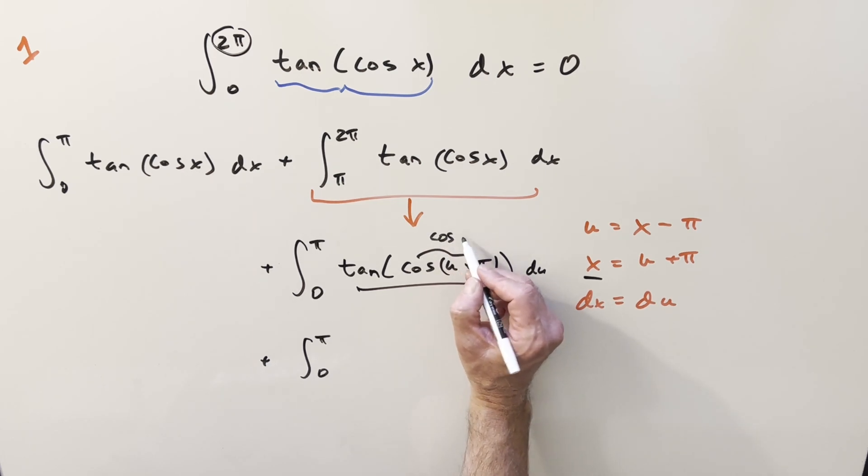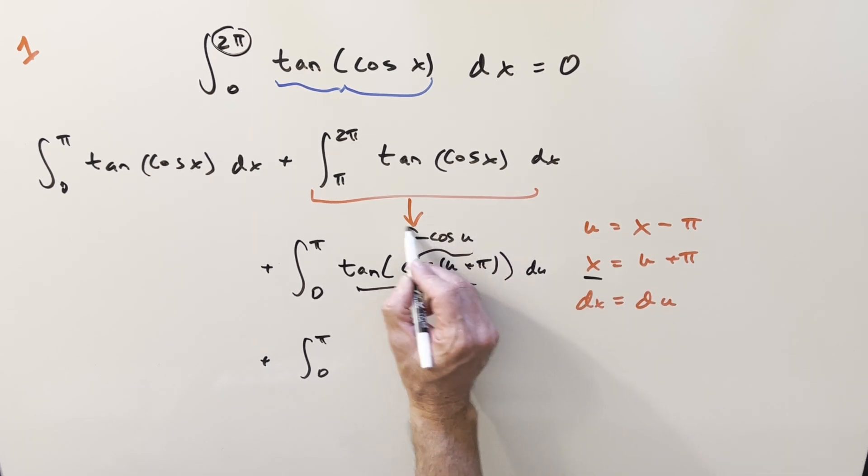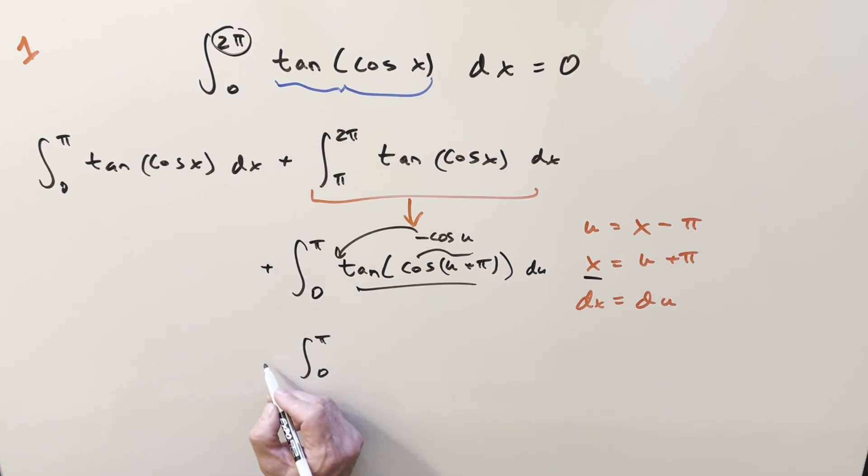But this right here is really the same thing we just did like two seconds ago, because we know this right here is going to become minus cosine of u. And this is an odd function, we can bring it out front. So what we'll do is we'll take the minus sign all the way up front of the integral, rewriting this in terms of u. This is going to become tan cosine u du.